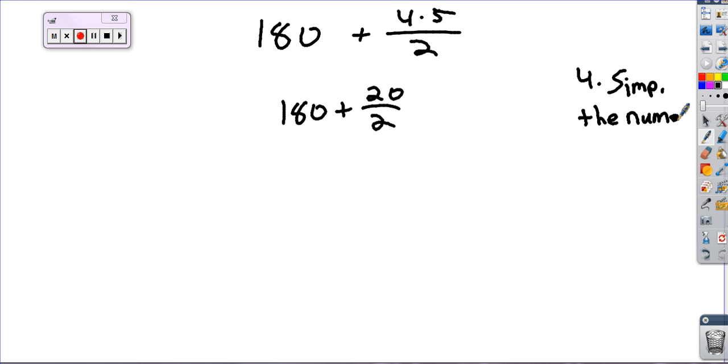So your fourth step is going to be what? What do you have to do? Four times five, which is 20. So it's 180 plus 20 divided by 2. So your fourth step, you simplified the numerator. You simplified the numerator, right? You did 4 times 5. Fifth step, what are you going to do?